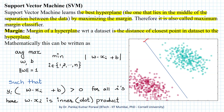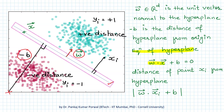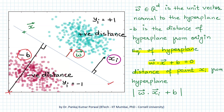Before getting into the mathematics of SVM, let us understand some geometrical concepts. Let's say this is our hyperplane, and w is the unit normal vector to the hyperplane. If the hyperplane is at a distance of -b from the origin — the distance is minus b, which will be explained in a moment — then the equation of the hyperplane is of the form w·x + b = 0, and the distance of a point xi from the hyperplane is the absolute value of w·xi + b.